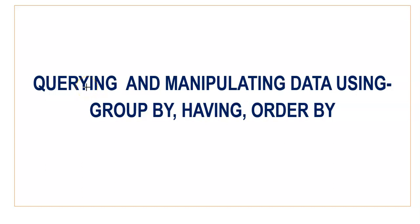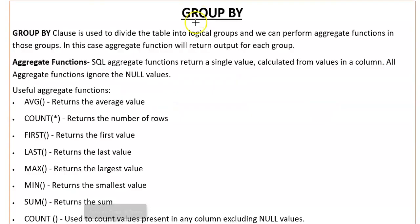Hello everyone. In this video you will get to know what is the use of GROUP BY, HAVING, and ORDER BY clause in SQL. The GROUP BY clause is used to divide the table into logical groups. With GROUP BY, you can perform aggregate functions in those groups, and the aggregate function will return output for each group.